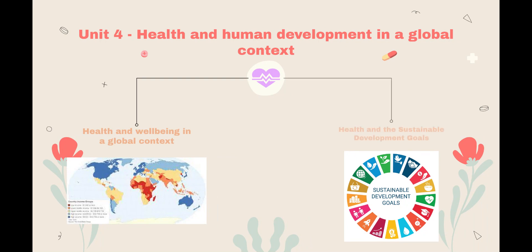Then we go into Unit 4, which widens our view a little bit and looks at health and well-being in a global context — the whole world — and we look at low, middle and high-income countries and how health and well-being differs in those countries. Then in the last area of study, we look at health and the sustainable development goals, which are the United Nations sustainable goals, and we look at how they interrelate with each other.